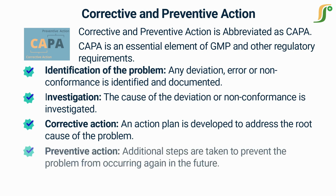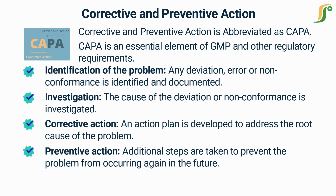The fourth part is preventive action. Additional steps are taken to prevent the problem from occurring again in the future. This may involve process improvements, personnel training, changes to procedures or systems, or other measures.